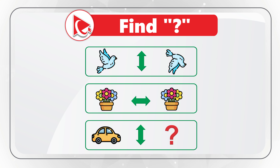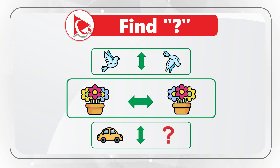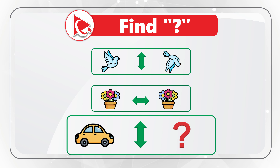The set of objects consists of three rows. In the first row, you see a pigeon, an arrow, and then the pigeon again. In the second row, you see a flower, an arrow, and then the flower again. In the third row, you see a car, the arrow, and then comes the missing item.